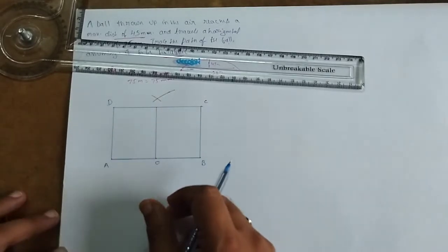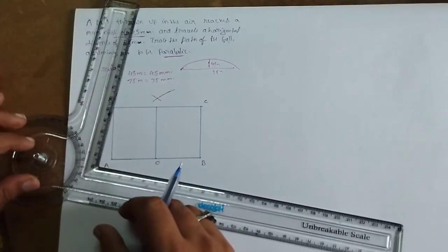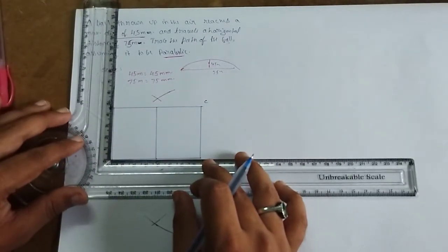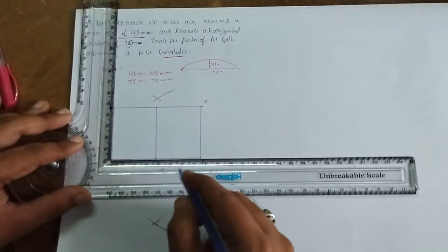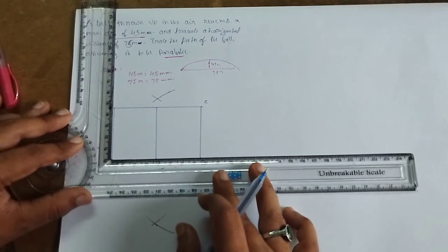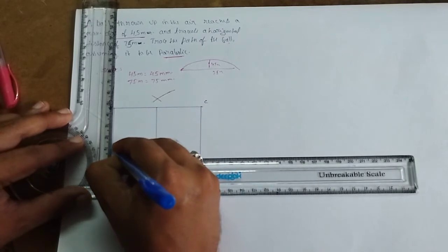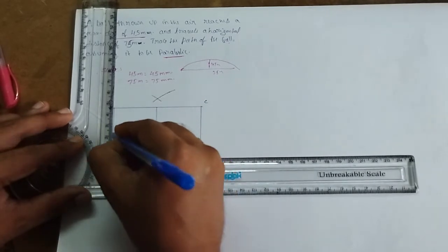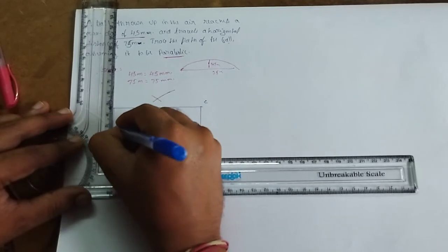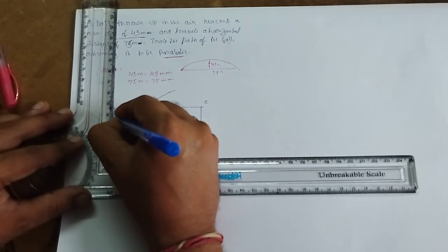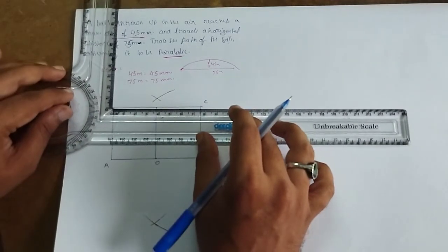Now for the oblong method, divide AD into equal number of parts. The height is 45, so I will make this into five equal parts - each part is 9mm. So 9, 18, 27, 36, and 45 - the point is there.